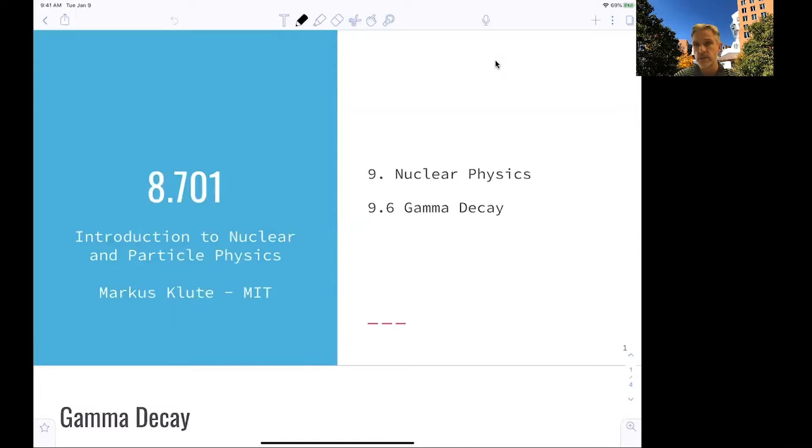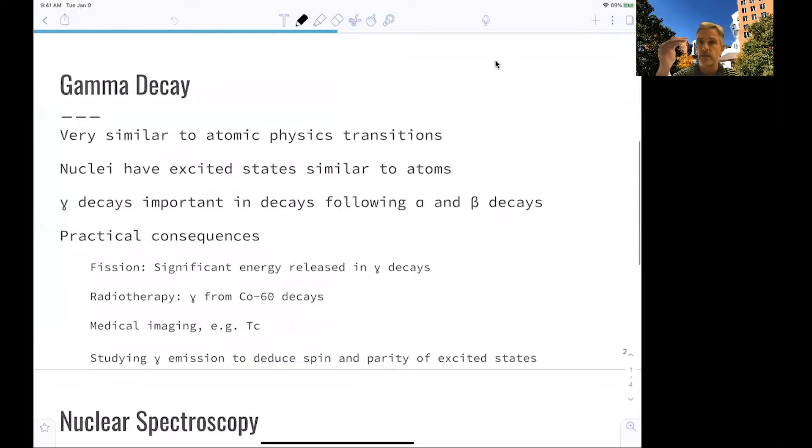Now, after the discussion of the Shell model, it is apparent that transition from various nuclear states can be accomplished via the emission of a photon, a gamma ray.